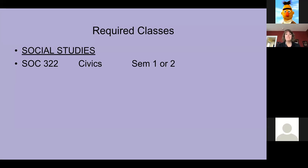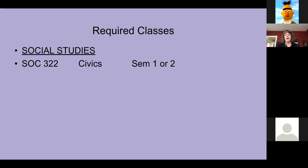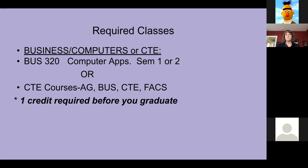The very last required class that everybody will take is under social studies: SOC 322. That is one semester, so you will have one semester of social studies next year. Now everybody should have eight course requests. On our seven-period day, you have four spots filled each semester. Periods five, six, and seven remain to fill - and that's where we go next with elective classes.